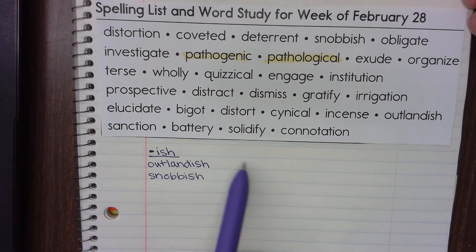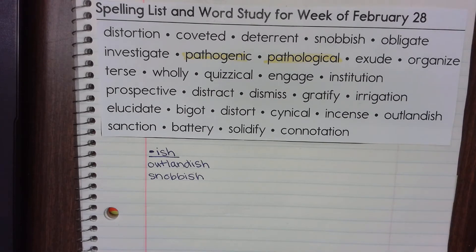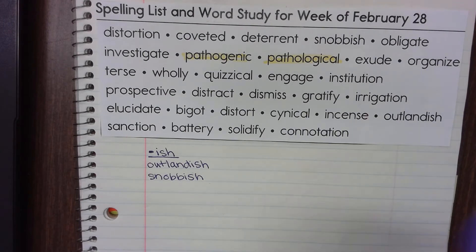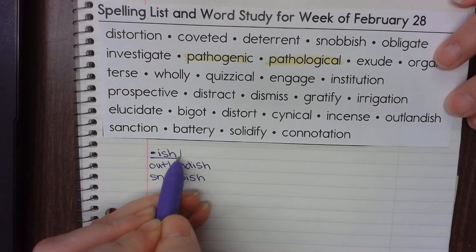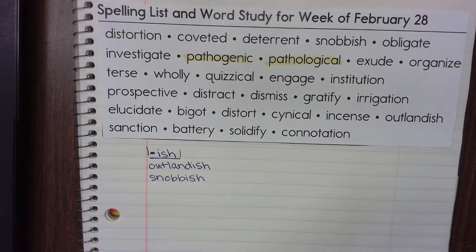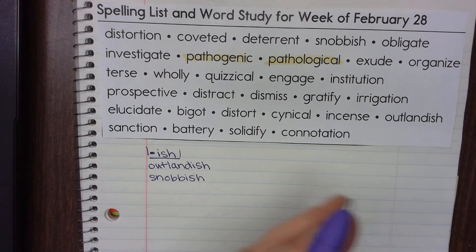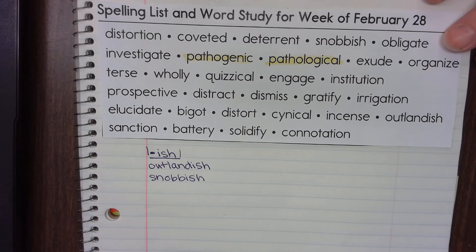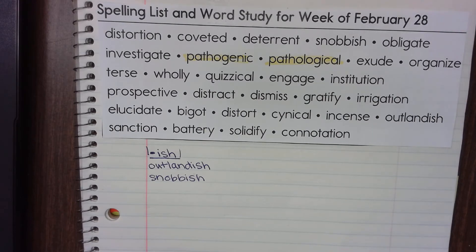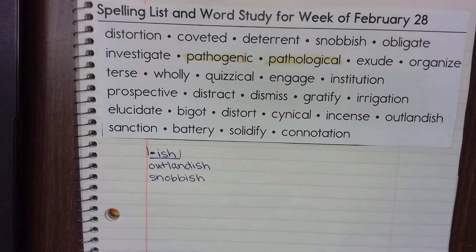So outlandish and snobbish should be the two words you found with the prefix "-ish." If something is snobbish, it means like a snob. The suffix "-ish" means "like" or "similar to." So snobbish — what part of speech is it? It is an adjective. It describes somebody. A snob would be a noun; snobbish would be "like a snob."